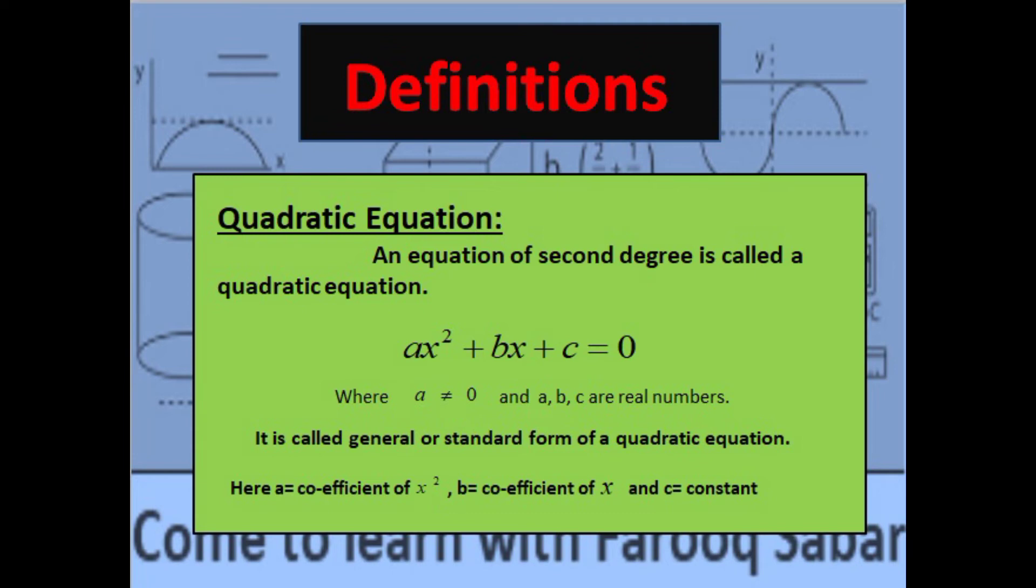It is called the standard or general form of a quadratic equation. ax² + bx + c is the general form. This means any quadratic equation will be in this shape; a, b, c can be any numbers, and the variable can be x, y, z, or anything.